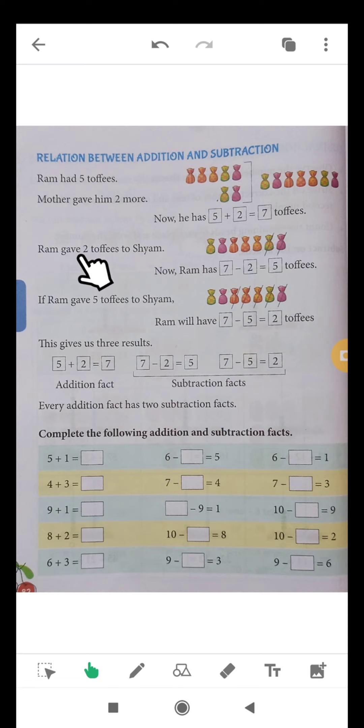Ram gave two toffees to Shyam. Now he has 7 minus 2. 7 minus 2, how much? 5. 7 minus 2 equals 5. Subtract 5, 5 toffees.